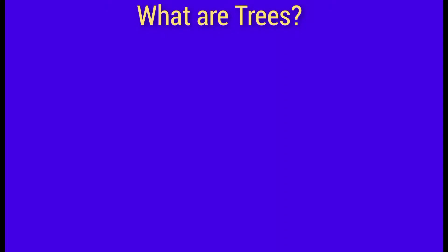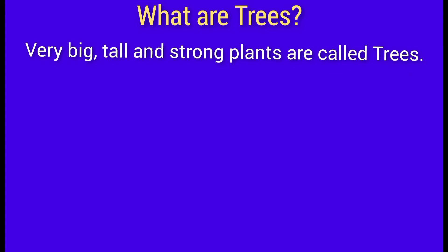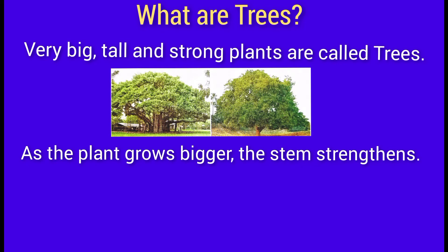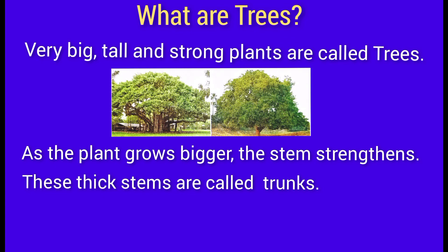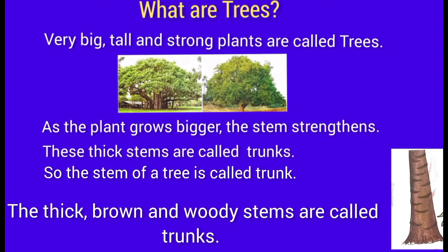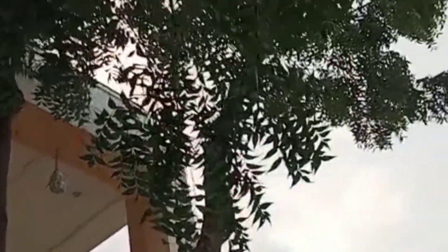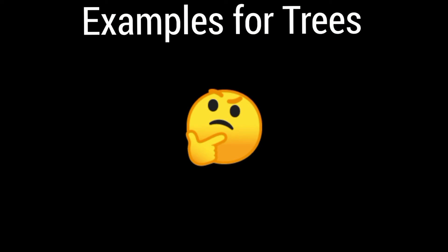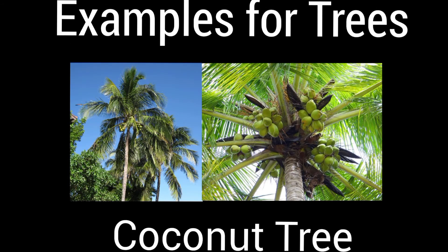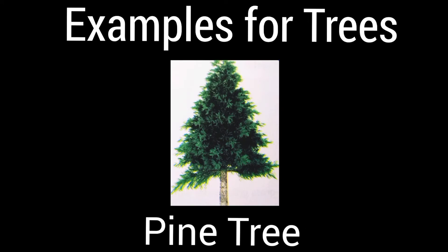What are trees? Very big, tall, and strong plants are called trees. As the plant grows bigger, the stem strengthens. These thick stems are called trunks. So the stem of a tree is called a trunk. The thick, brown, and woody stems are called trunks. Examples of trees are banyan, coconut, and pine.